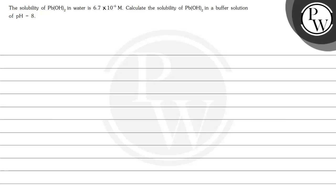Hello. Let's see the question here. The solubility of Pb(OH)₂ in water is 6.7 × 10⁻⁶ molar. Calculate the solubility of Pb(OH)₂ in a buffer solution of pH 8.